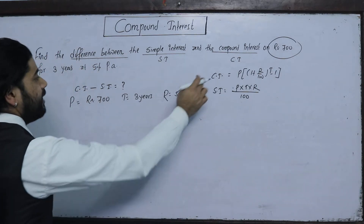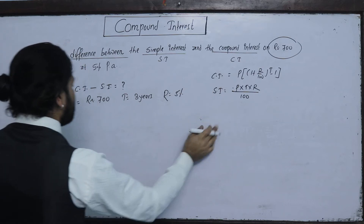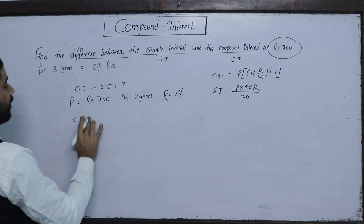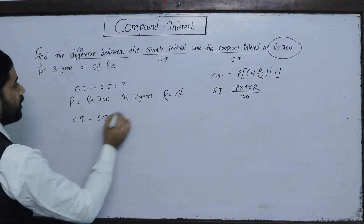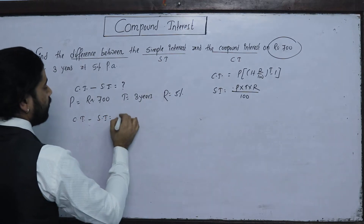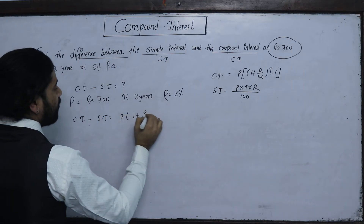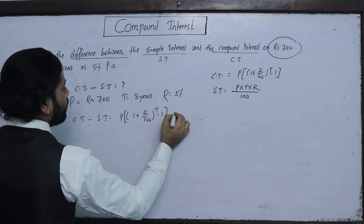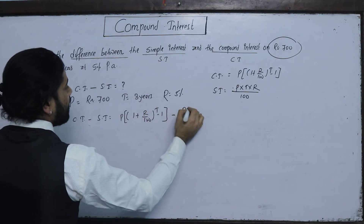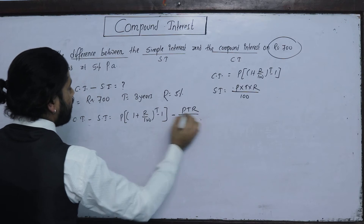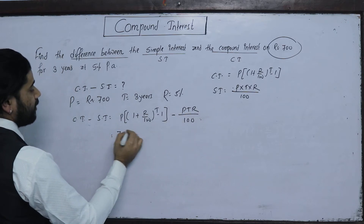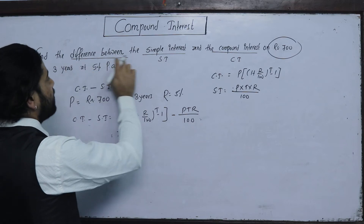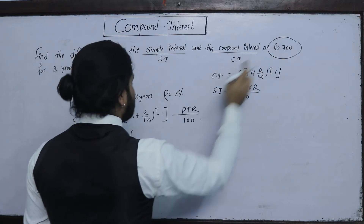Using the data, we set up: CI − SI = P × [(1 + R/100)^T − 1] − PTR/100. The difference equals 700. So: 700 = P × [(1 + R/100)^T − 1 − TR/100].